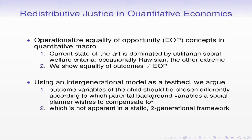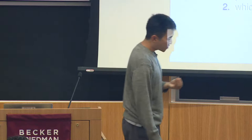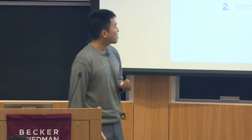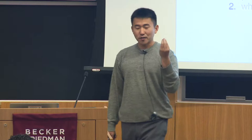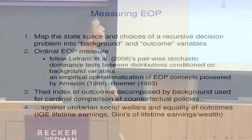This framework sheds light on some things I think did not receive much attention. Namely, I'm going to argue that the outcome variables of the child—the object you look at for measuring equality of opportunity—should be chosen differently according to which parental background variable you want to compensate for. This is much more obvious in an infinitely lived dynastic framework than in a simple two-generation model.